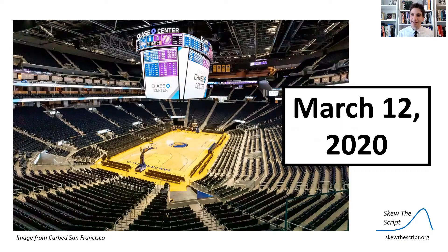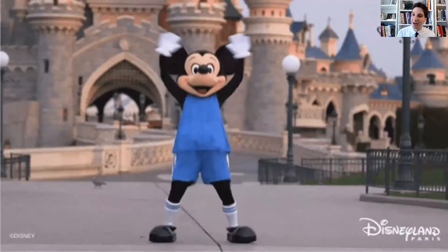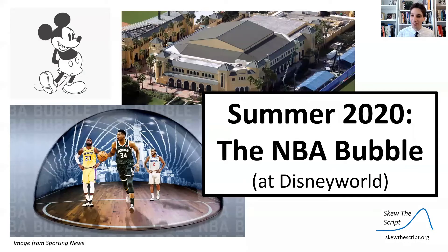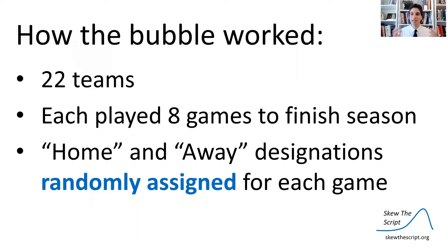Several months later, out of the ashes of the season, a new hero emerged — Mickey Mouse, funny enough. What Disney World did was they opened their doors up to the NBA and made what was called the NBA bubble. All the players came in, tested for COVID-19 along with the coaches and training staff. They came into the bubble and weren't allowed to enter or exit anymore, and they played the rest of their season. There were 22 teams, each played eight games to finish their season, and within these games, the home and away designations were randomly assigned, because they were playing on a neutral court, not in their home stadium.